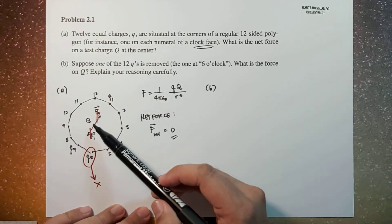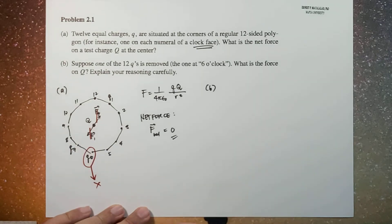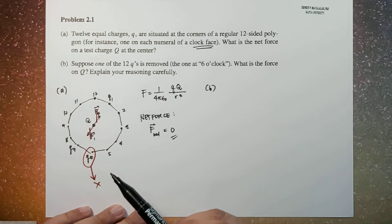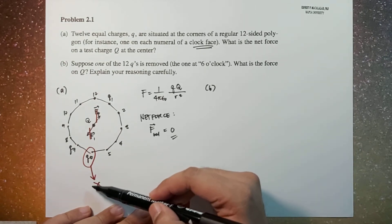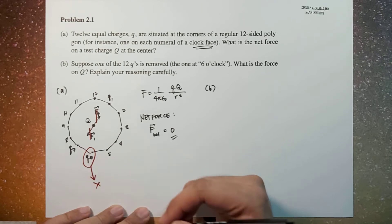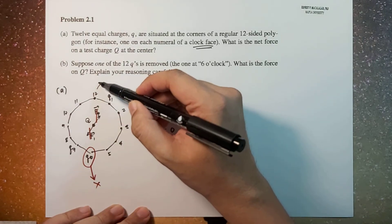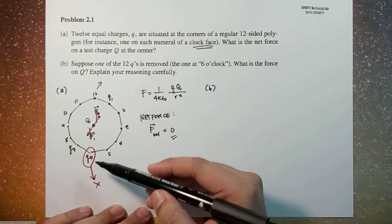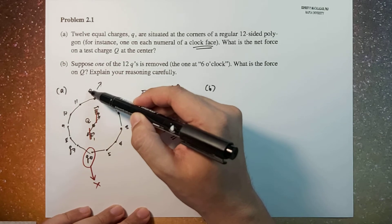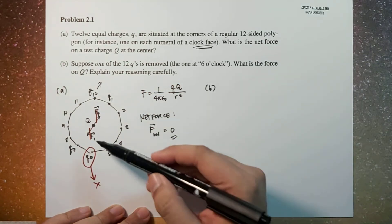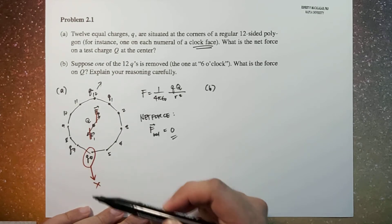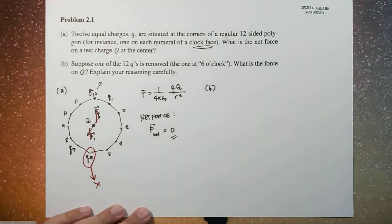Each two opposite pairs in this polygon will have forces that just cancel each other. Now if we remove the six o'clock charge, that means the 12 o'clock charge will not have a pair on the other side. So the force exerted by q12 on Q will not be canceled because there's no charge at this point.